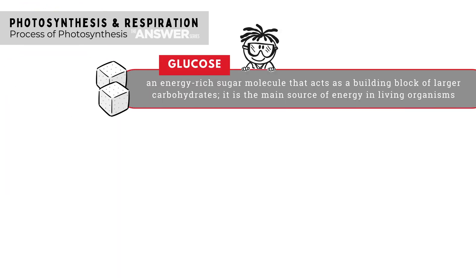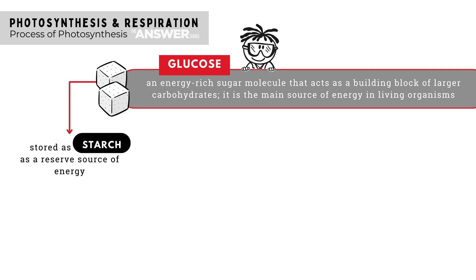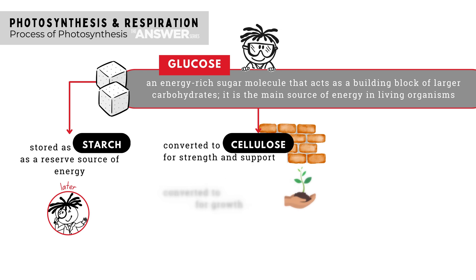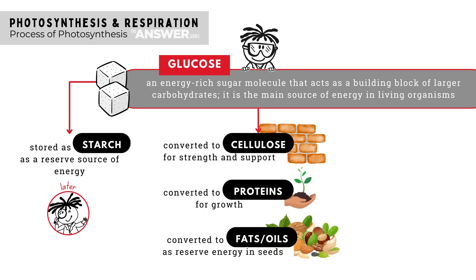Depending on the plant's needs, the glucose it produces can be stored as a reserve source of energy. The plant converts the glucose into starch, which is the storage form of glucose in plants. Some of the glucose can also be converted into other substances like cellulose for strength and support, proteins that help them grow, or fats and oils that provide seeds with the energy they need to germinate and grow. The plant can also use glucose to produce energy for itself to perform all of these other functions.